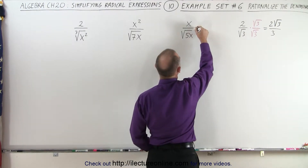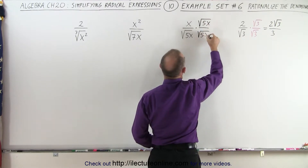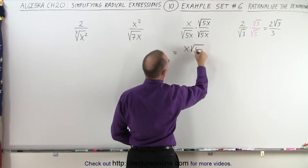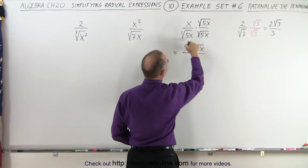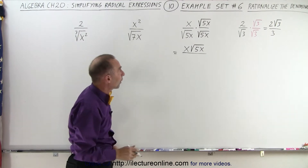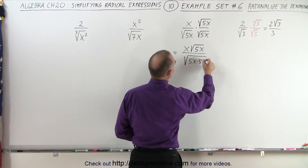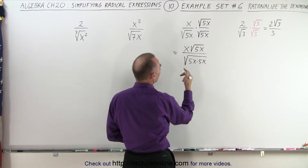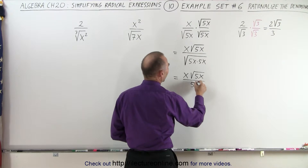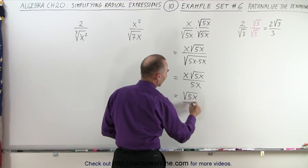We do the same over here. We're going to multiply both the top and the bottom by the square root of 5x — we simply duplicate what we have in the denominator. This becomes x times the square root of 5x divided by 5x, because the square root of 5x times 5x equals 5x. Then the x's cancel out, so this equals the square root of 5x divided by 5.